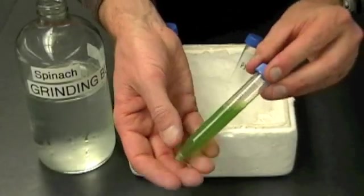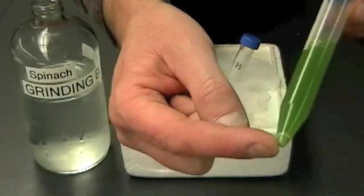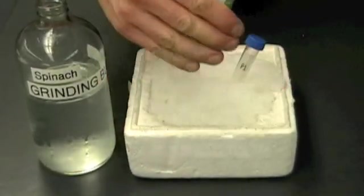Alright, so this is that first supernatant after it's been spun again at a higher speed. And you can see that now there's a new pellet down here at the bottom as well. So again, I have to separate the pellet from the supernatant.